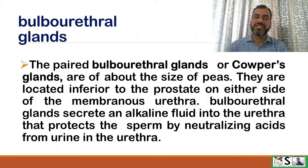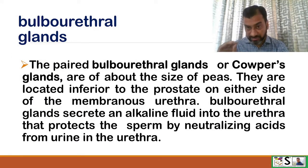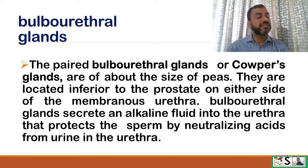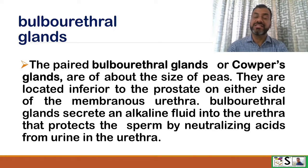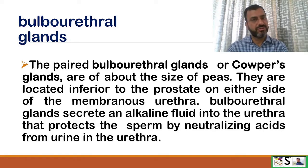The paired bulbourethral glands, also called Cowper's glands, are two pea-sized glands located inferior to the prostate on either side of the membranous urethra. They secrete an alkaline fluid into the urethra that protects sperm by neutralizing the acids from urine in the urethra.